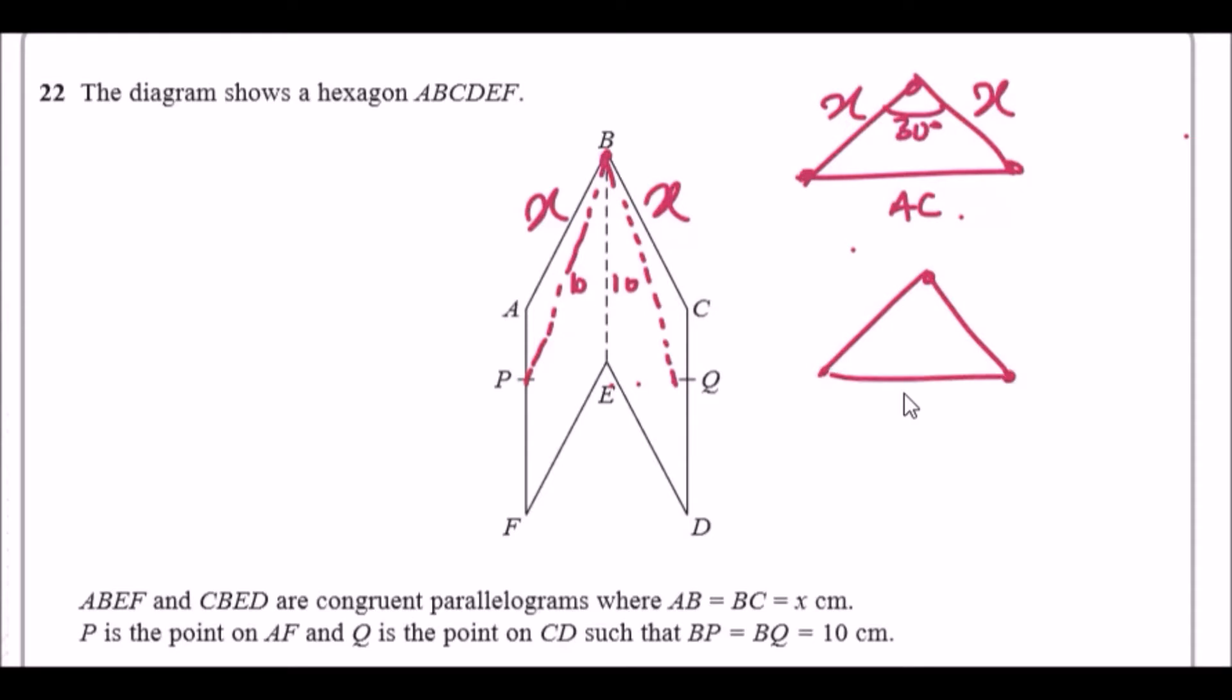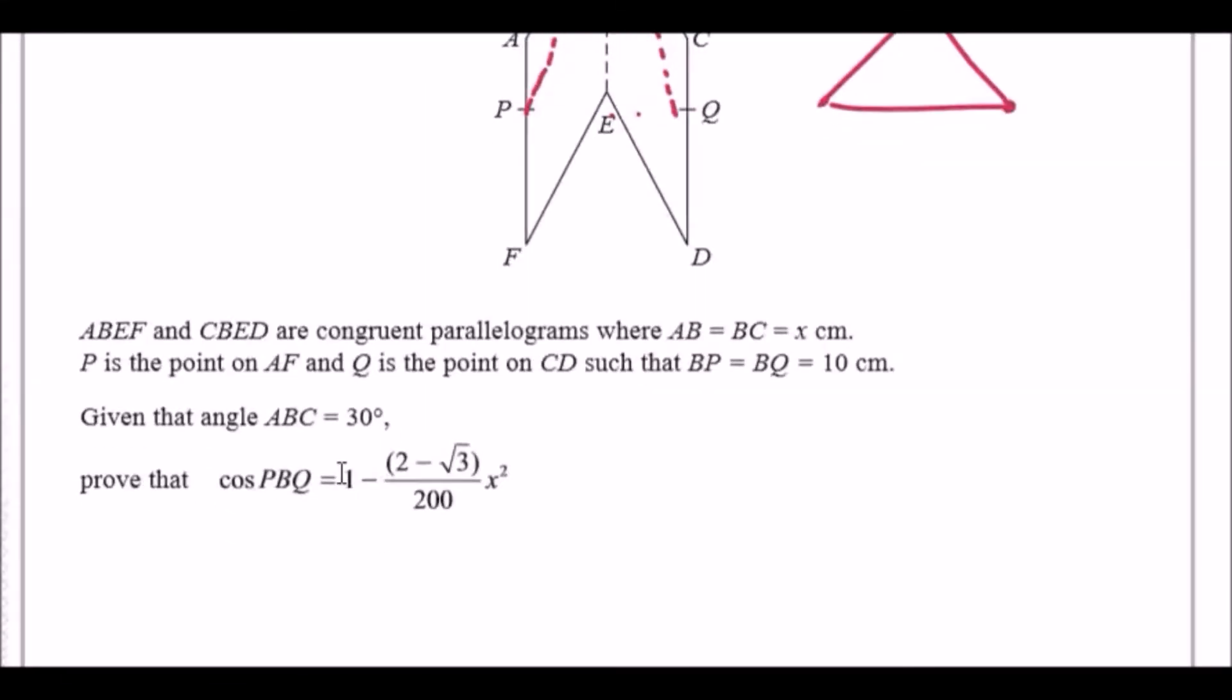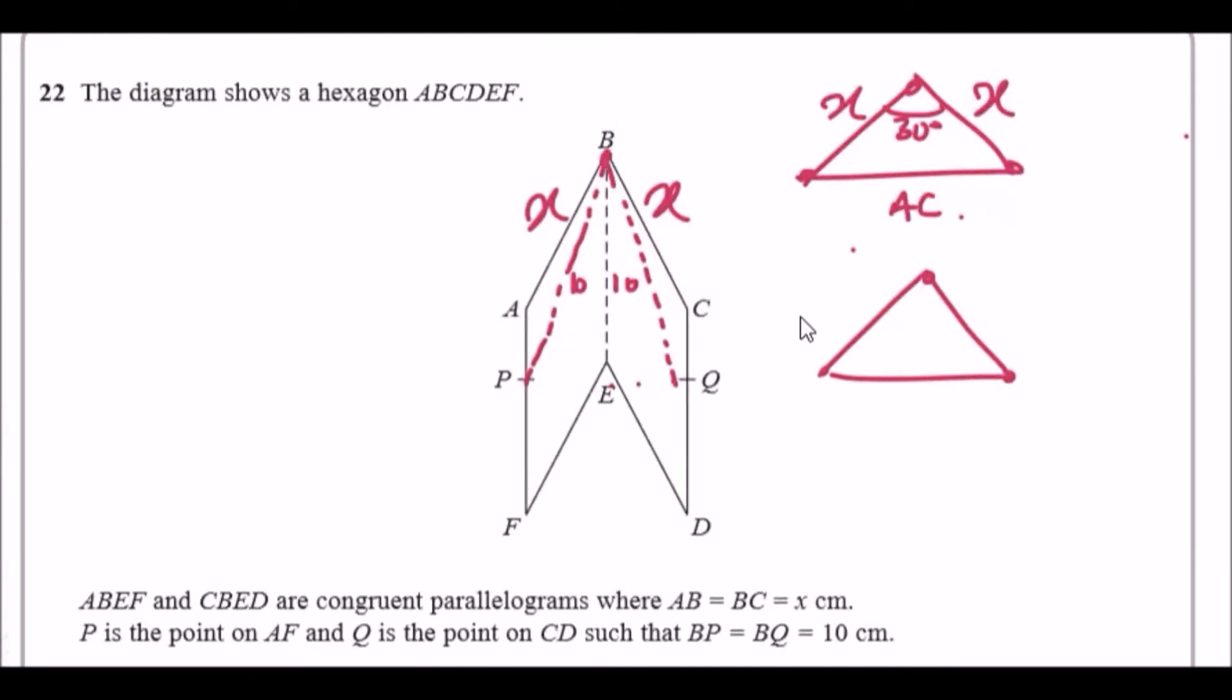Because again, always good to represent this properly, and I'm going to rename PBQ as alpha just so it's easy to work with. So PBQ is alpha, so this is the angle alpha, and we know between alpha is 10 and 10.